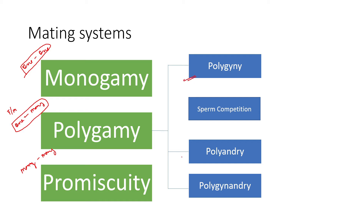Polygamy can be of different types: polygyny, polyandry, and polygynandry. Polygyny refers to multiple females — one male with multiple females. Polyandry is one female with multiple males. Polygynandry is a system where one male can mate with multiple females and sometimes females also mate with multiple males — both situations occur across multiple breeding seasons.